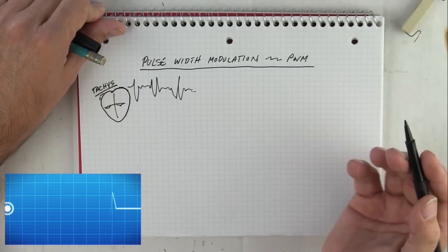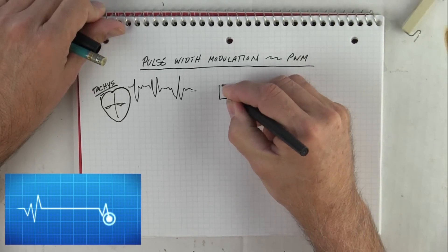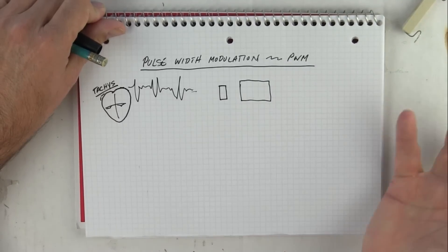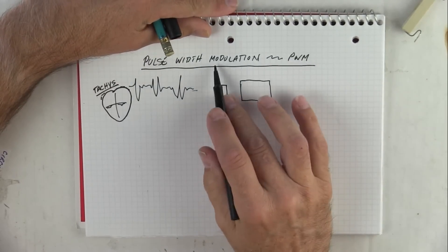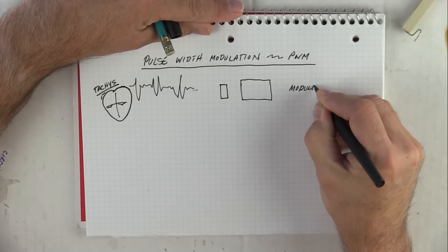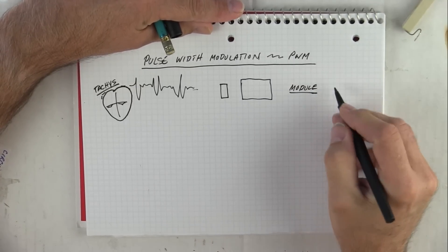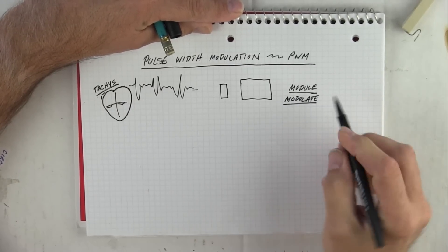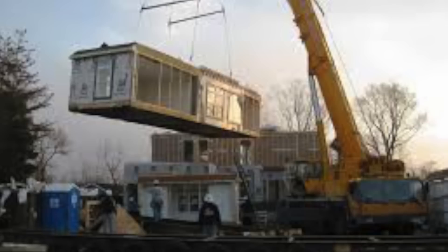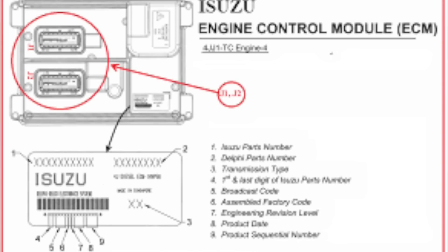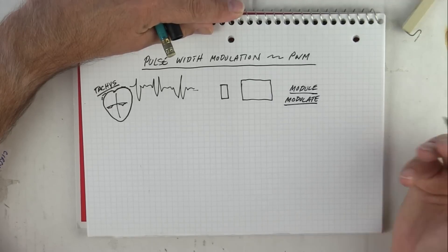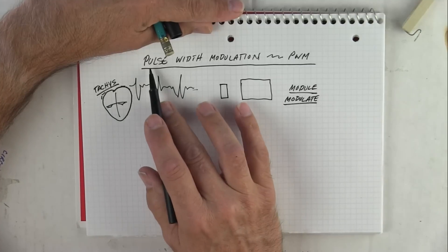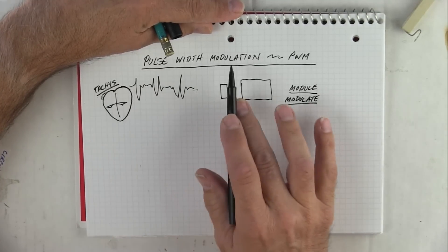Width is width — this is narrow and this is wide. The only word you may not be familiar with is 'modulate,' which is the same word as 'module.' Module or modulate literally means to change. Modular maintenance, modular home, engine control module — an engine control module is easy to change. So literally, pulse width modulation means to change the width of a pulse.